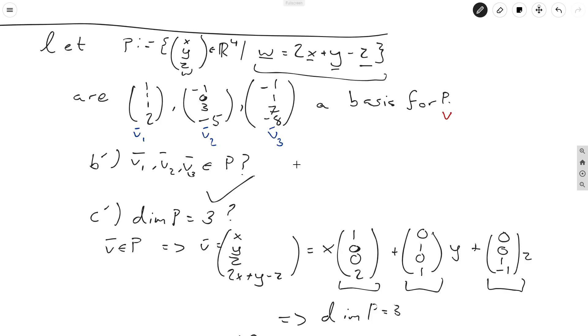Then, by using our knowledge of vector addition and scaling, we can rewrite this vector (x, y, z, 2x + y - z) as the sum of three different vectors: x times (1, 0, 0, 2), y times (0, 1, 0, 1), and z times (0, 0, 1, -1).